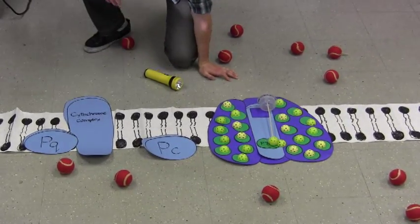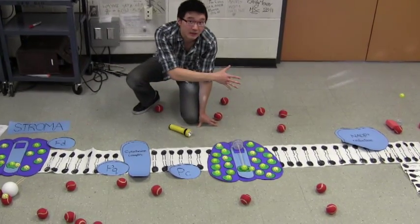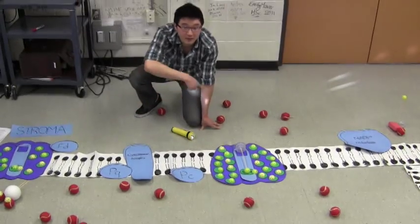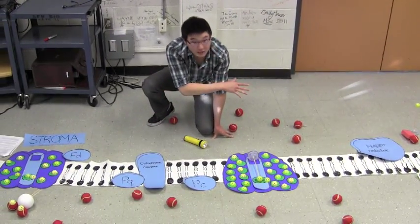So notice that in this process, we did not have to split water because we didn't give away any of the electrons. We just took the same electron and went around and around in a cyclic flow. And also that we're not making any NADPH.